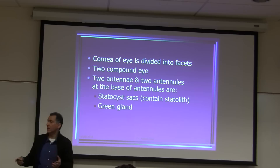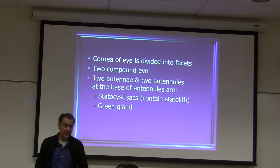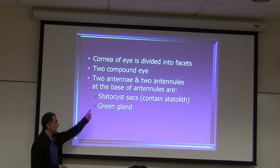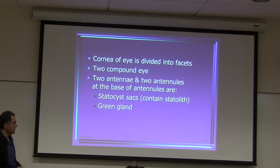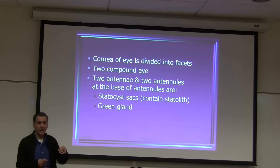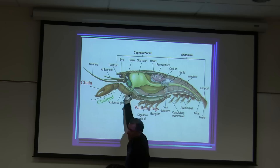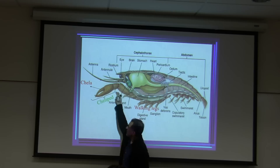In preserved dissection specimens, the green gland appears cream-colored, not green. It is very large — you will easily see it. The statocyst is smaller and tougher to find; be careful not to destroy it. The first pair of walking legs is the chelipede, and the pinching end is called the chela.